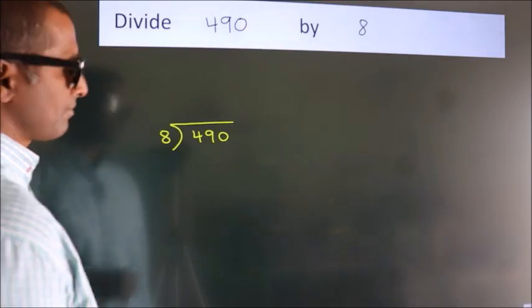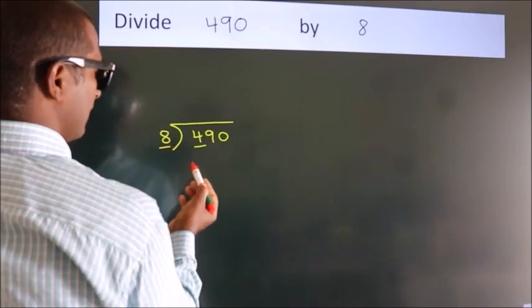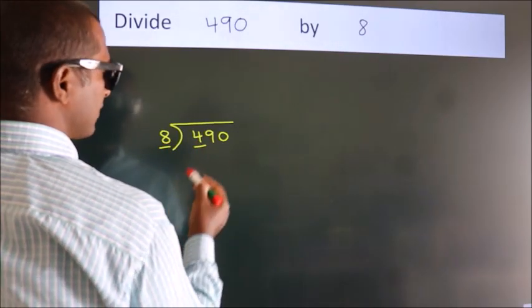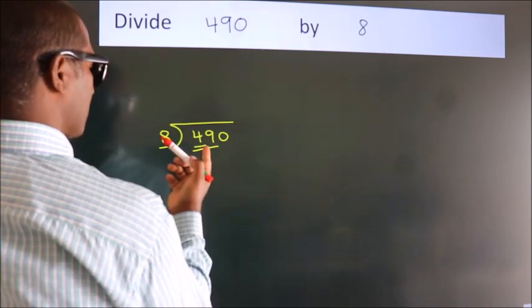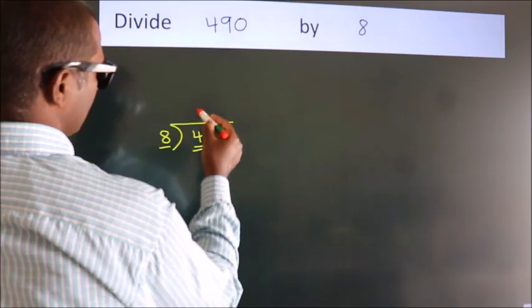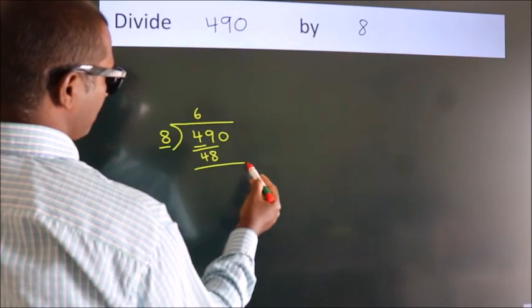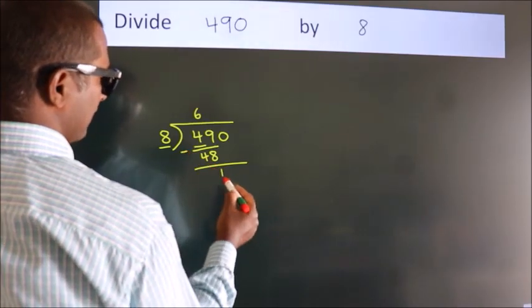Next. Here we have 4. Here 8. 4 smaller than 8. So we should take 2 numbers. 49. A number close to 49 in 8 table is 8, 6, 48. Now we should subtract. We get 1.